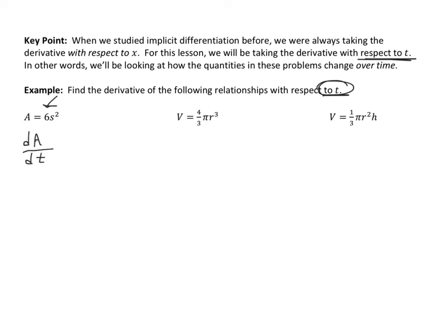Another way to think about it is that the derivative of a is dA/dt — the notation dA/dt literally means the rate of change of a with respect to t. On the right-hand side, I have 6s squared. Using the power rule gives me 12s, and then by the chain rule I multiply by the derivative of s, which is ds/dt.